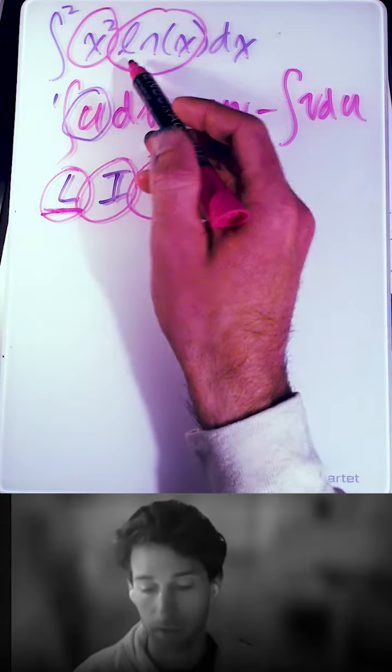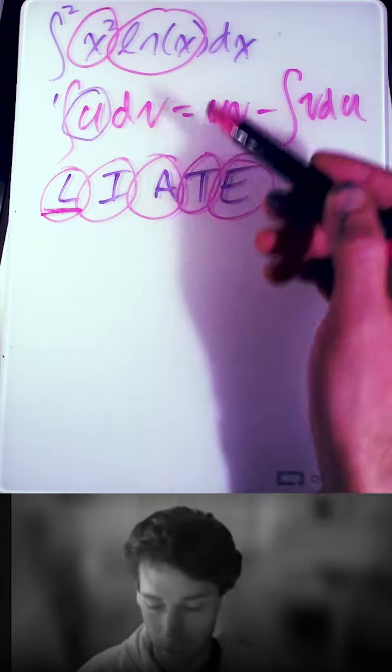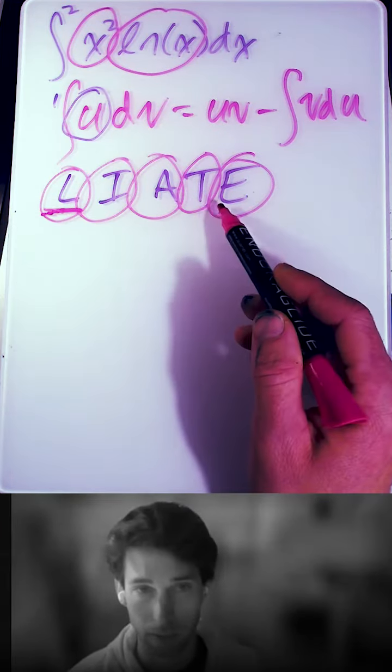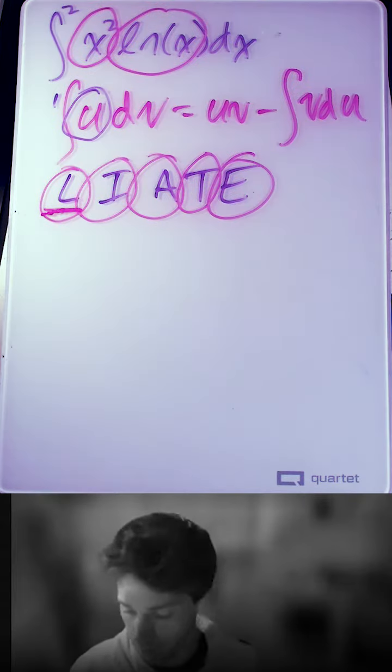So logarithmic, ln of x is logarithmic. x squared is algebraic. So logarithmic came first as we went down our acronym LIATE. So we're going to try ln of x as our u.